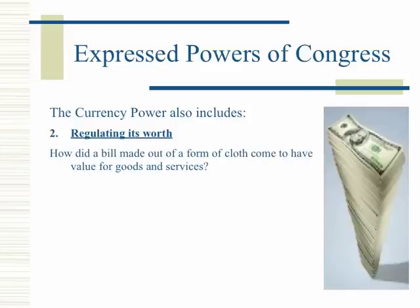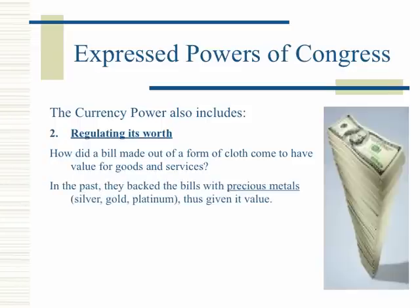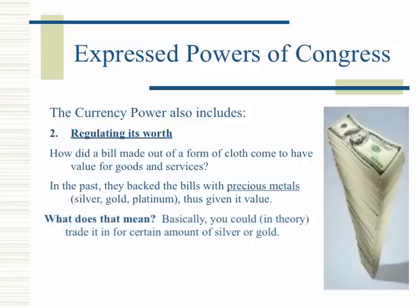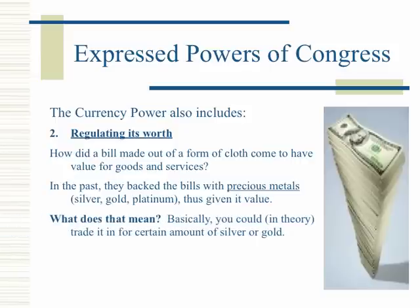How did a bill made out of a form of cloth come to have value for goods and services? In the past, they backed the bill with precious metals — silver, gold, platinum — thus giving it value. Basically, you could, in theory, trade it in for a certain amount of silver or gold.